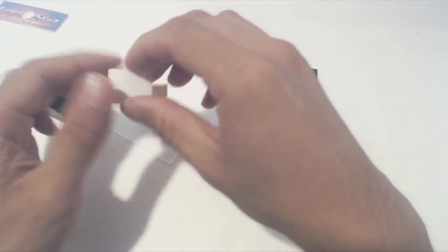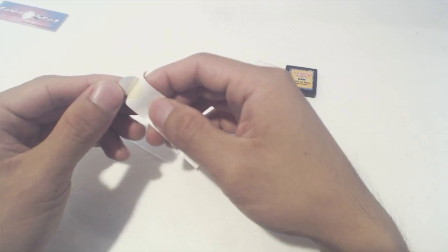Inside this box is a strip of six blank round sticker labels so you can mark your slides so you know what's on them.